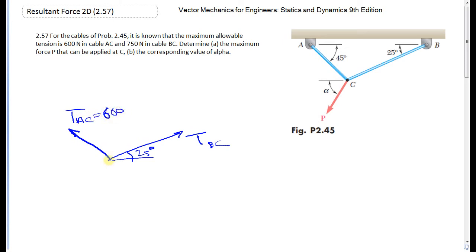600 and the angle is 45 degrees, and then we have P with alpha.